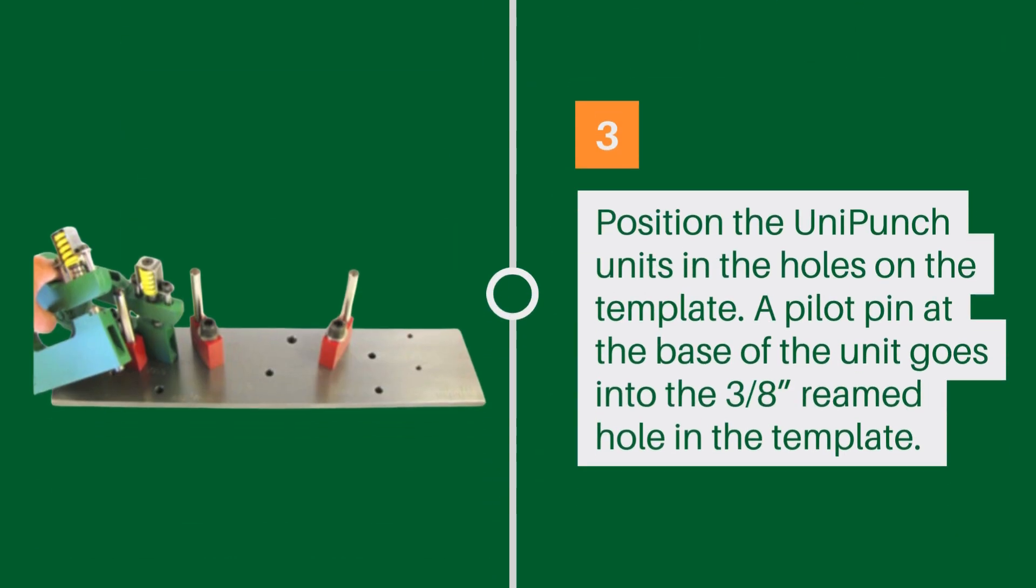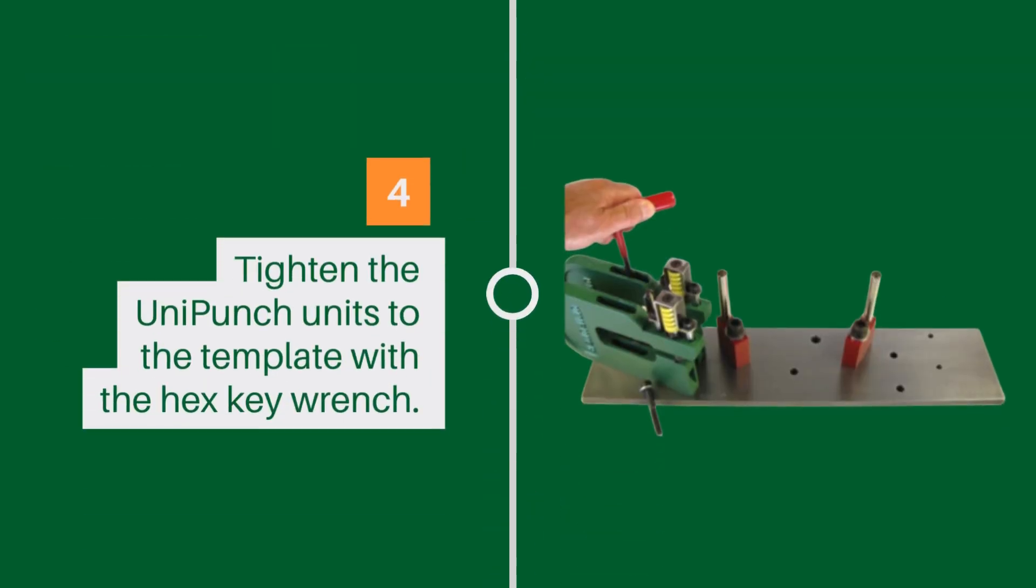Position the UniPunch units in the holes on the template. A pilot pin at the base of the unit goes into the three eighths inch reamed hole in the template. Tighten the UniPunch units to the template with a hex key wrench.